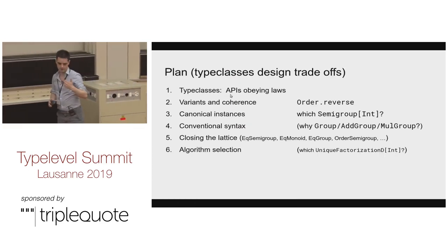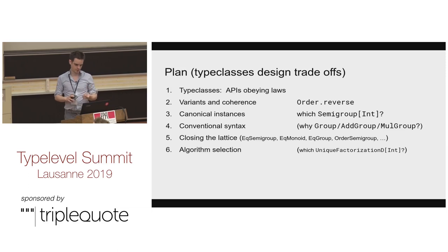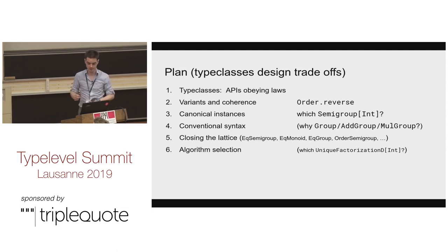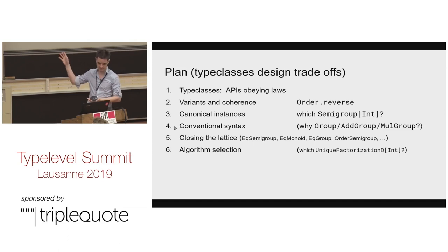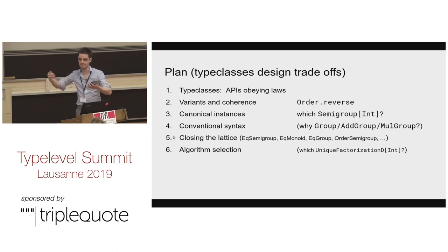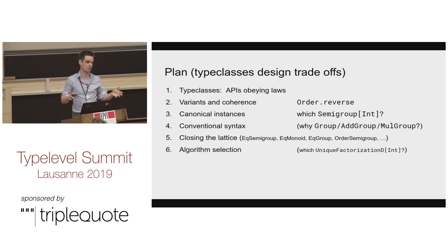The plan for this talk: first, we'll look at the value of type classes — laws and getting tests for free. Second, variants and the fact that we can create new type classes by reversing things, and what that means for our ecosystem. Third, which instances do we provide for standard types. Fourth, syntax — the replication issue. Fifth, closing the lattice when you have many variants needing all combinations of type classes. Finally, sometimes even a math textbook says something exists and is unique, but when you compute with it you have different ways of getting results and more freedom than with ideal mathematical objects.